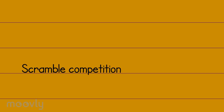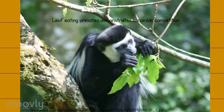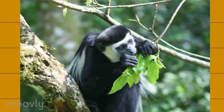A scramble competition is when there happens to be a lot of low quality food. This is most common with leaf-eating primates because trees tend to have larger quantities of edible leaves, though some are of low quality. This can also be referred to as indirect competition, in which whoever finds or eats the food faster gets more than those who don't eat as fast.